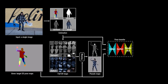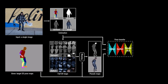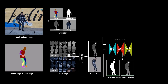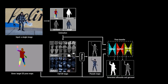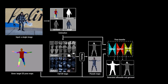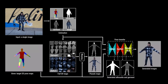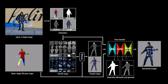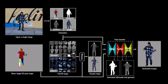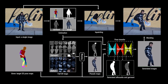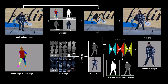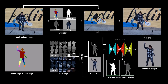Our pose transfer network predicts the silhouette, garment labels, and the person image consecutively from the source data, pseudo-map, and target poses. Finally, we blend the generated images with the in-painted background scenes.